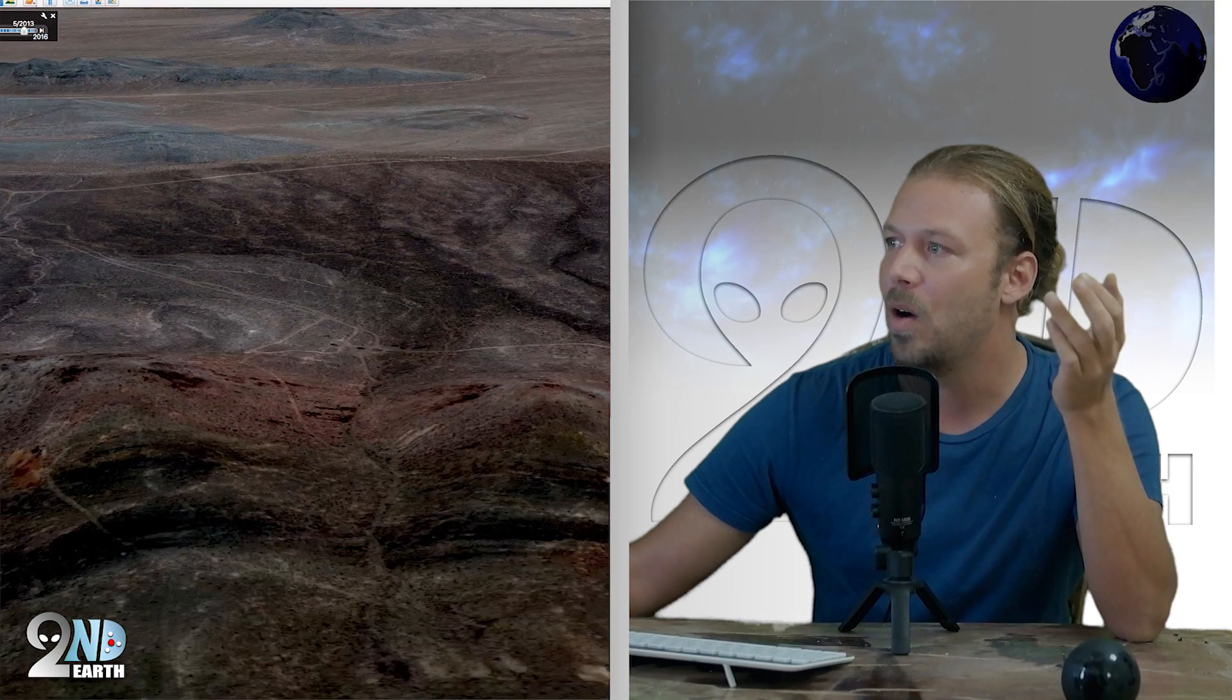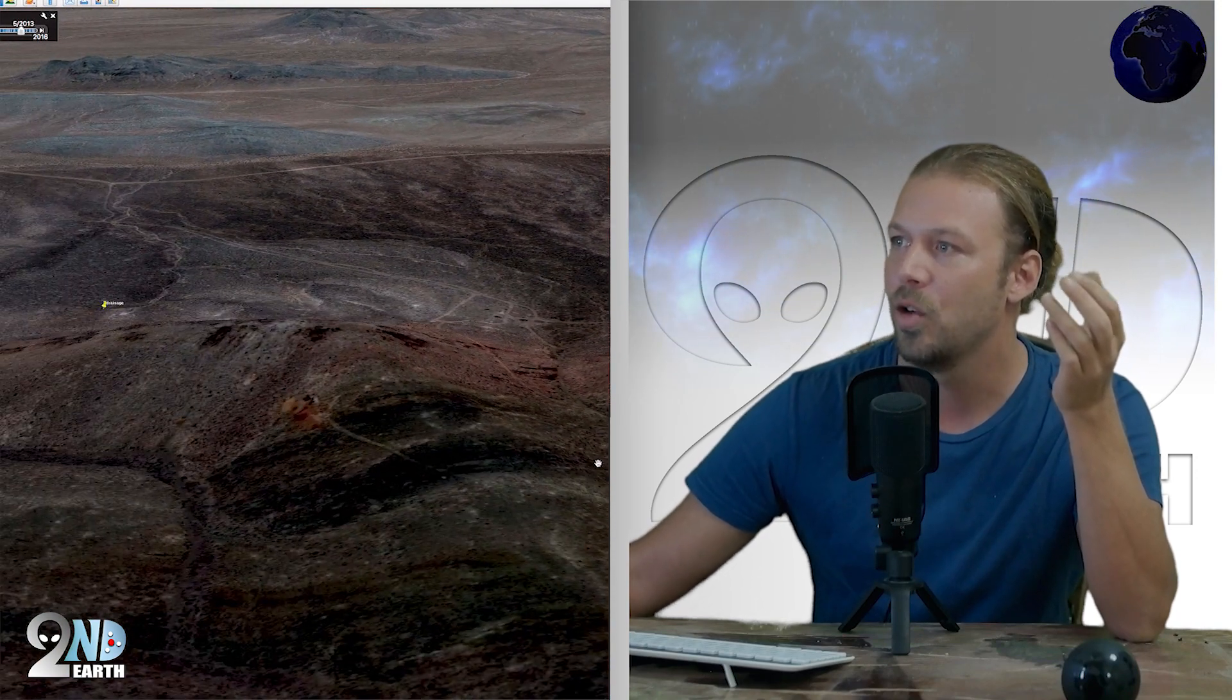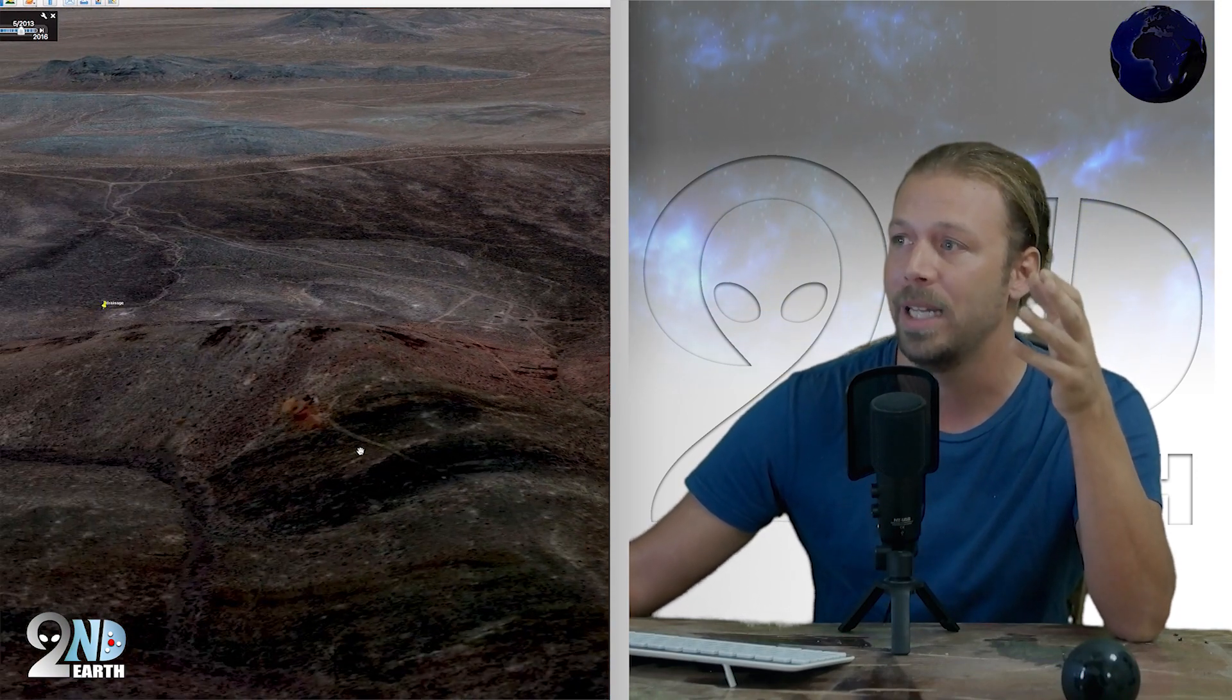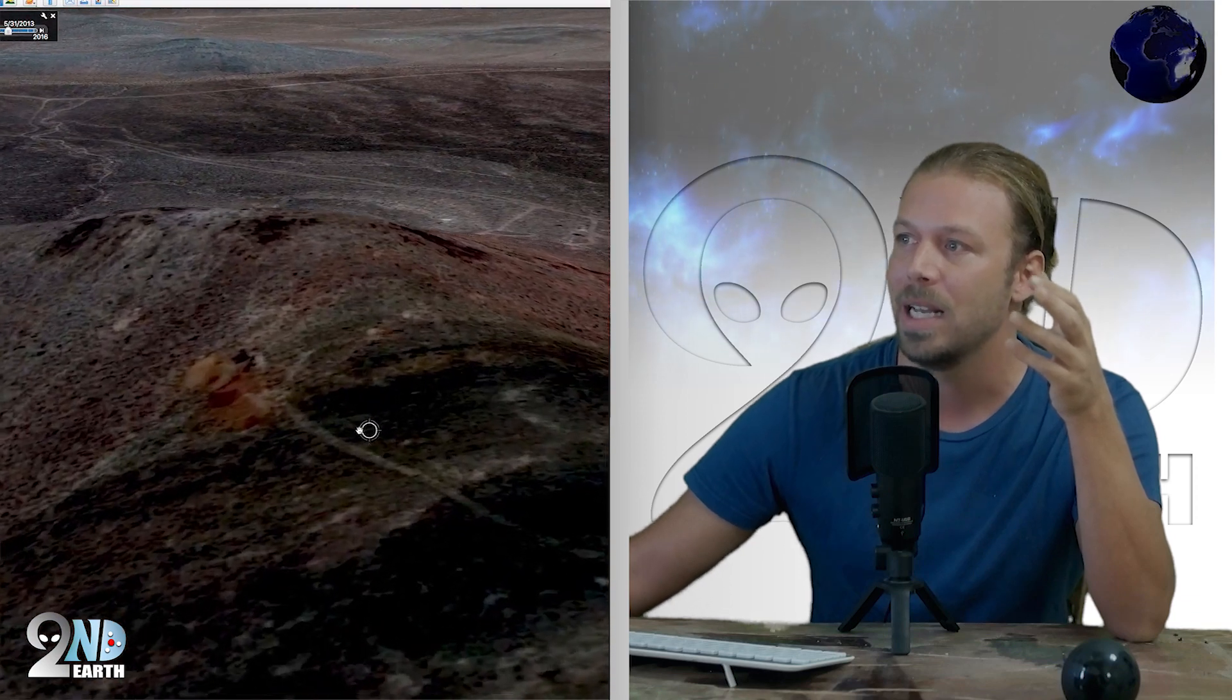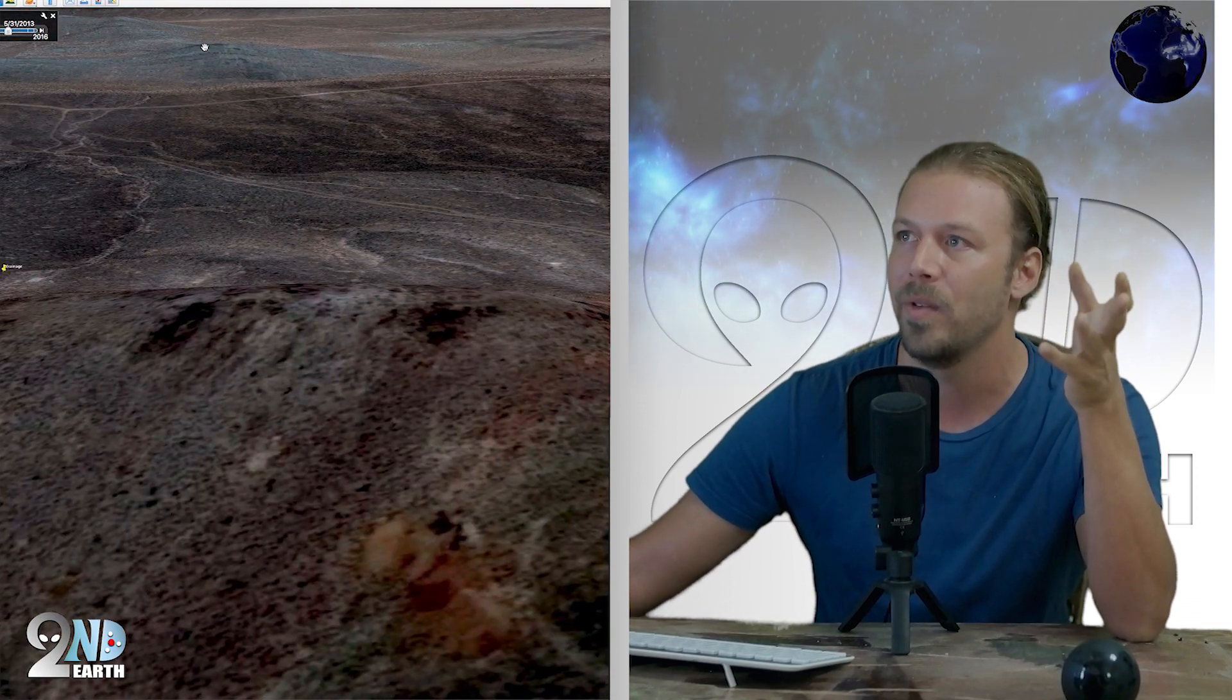but not just on top of a mountain, but it kind of goes into the mountain. Whatever this artificial structure is, here it is again. Let's get a more top-down view so we can see all the structures that are embedded within this mountain.